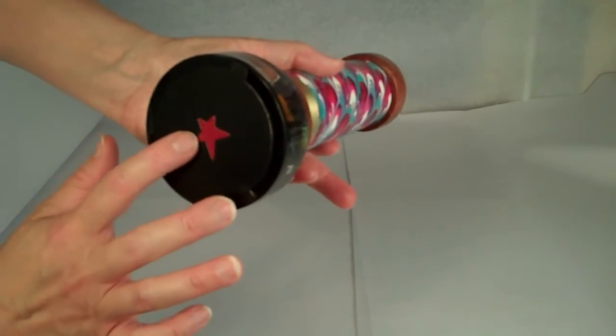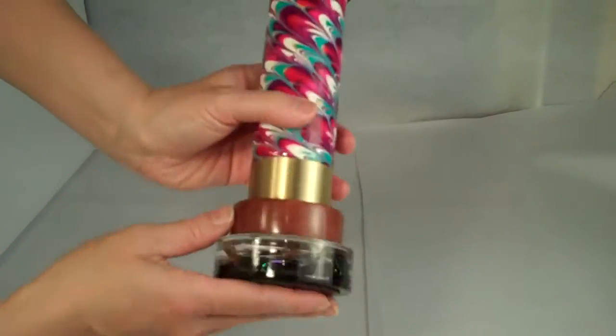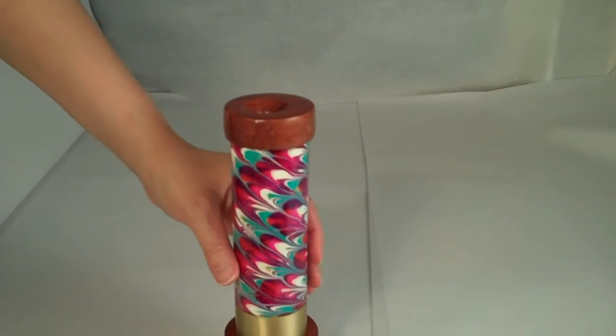This beautiful kaleidoscope has a piece of black leather with a red star on the bottom to cushion it as it rests upon your desk or on your table.